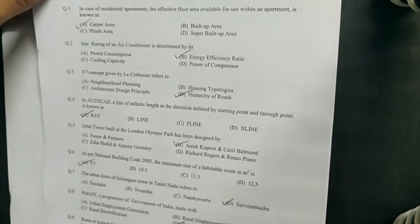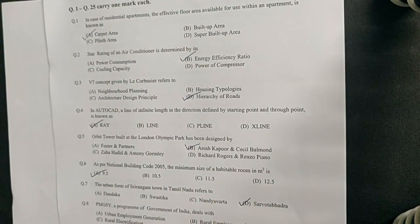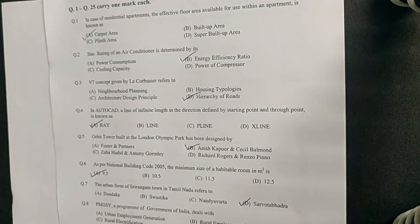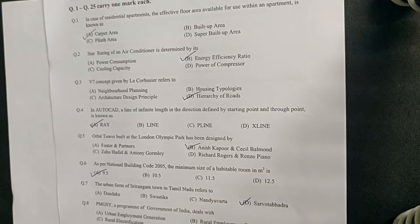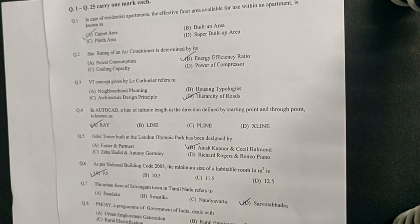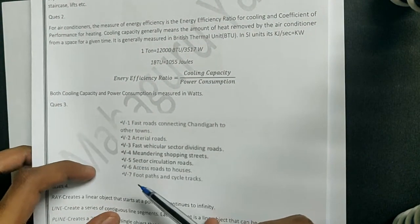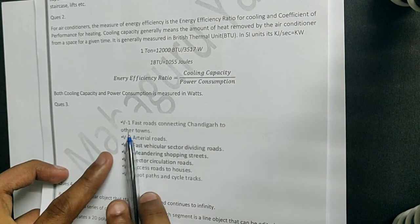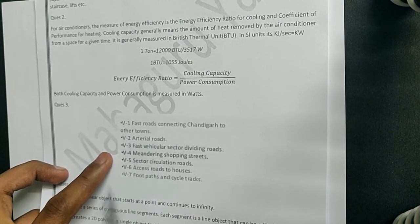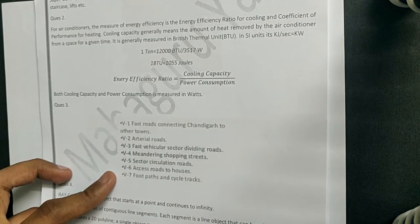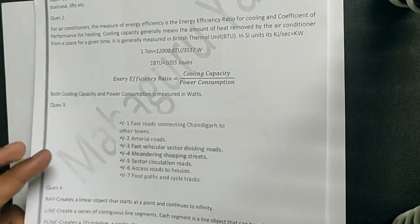The next question: the V7 concept given by Le Corbusier refers to which of the following? Le Corbusier designed the famous city of Chandigarh, where he divided the plan into various sectors. These sectors were divided with different kinds of roads — seven different hierarchies of roads, nomenclatured as V1 to V7. In the notes you can see which hierarchy refers to which type of road.